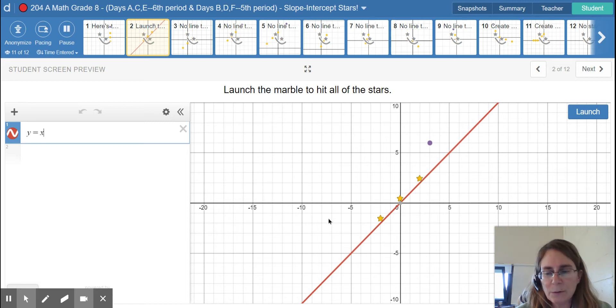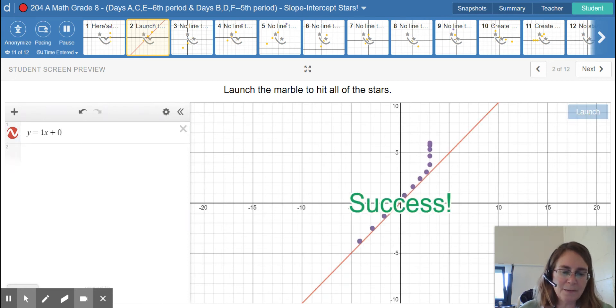So 2 over 2 is the same as 1, and we would want the line to cross at 0, at the origin in this case. We could even rewrite this to say y equals 1x plus 0. It's the same exact equation. That's success.